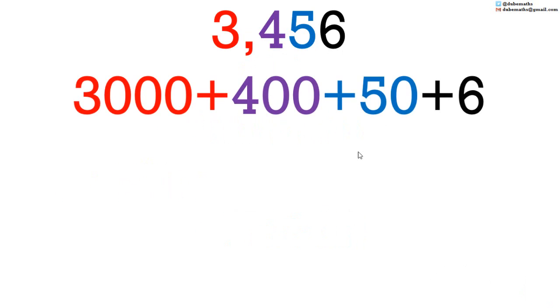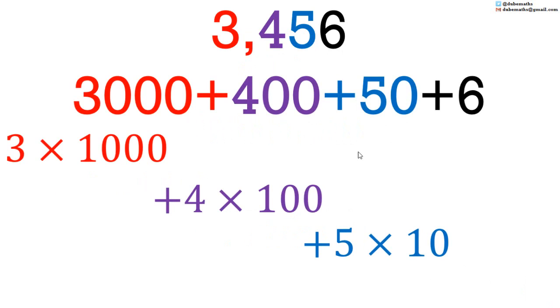Similarly, 3456 is 3000 plus 400 plus 50 plus 6. That is 3 multiplied by 1000 plus 4 multiplied by 100 plus 5 multiplied by 10 plus 6 multiplied by 1.